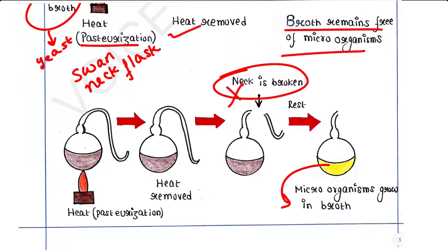Because in this case, these germs were able to enter the flask because the neck is broken, and they replicated, they multiplied, and Pasteur observed huge number of microorganisms grew in the broth.